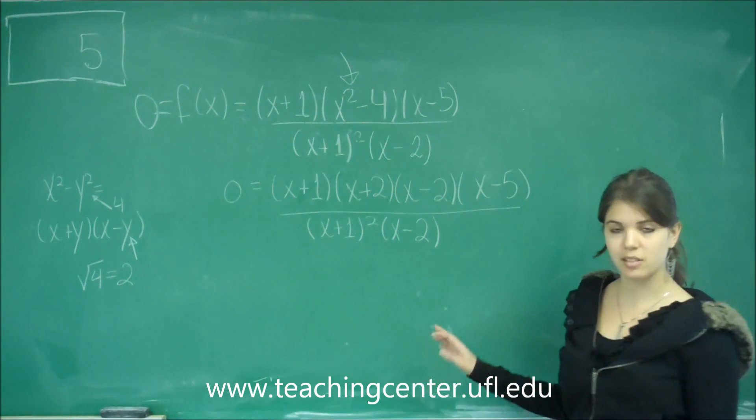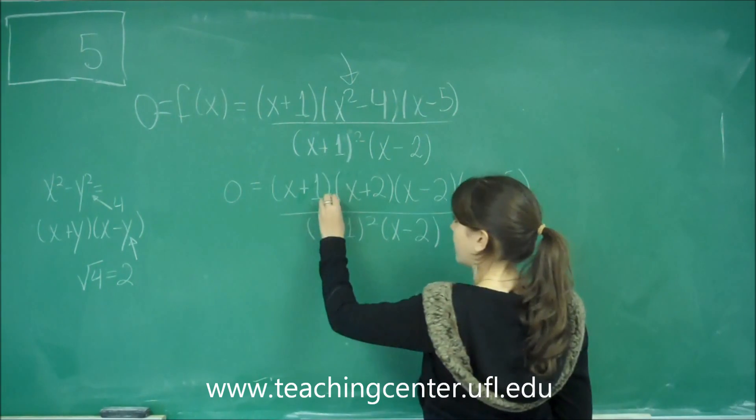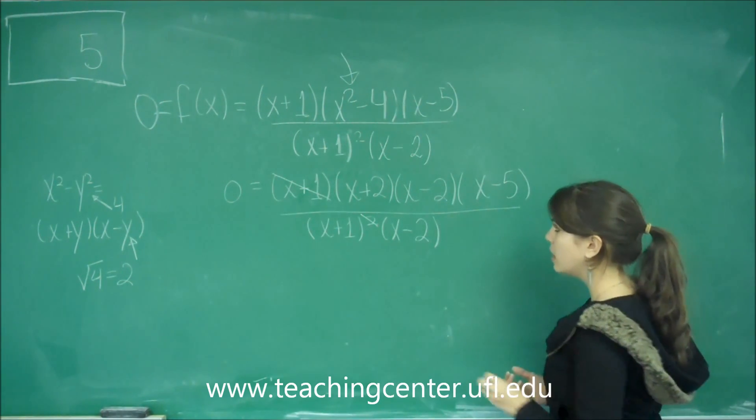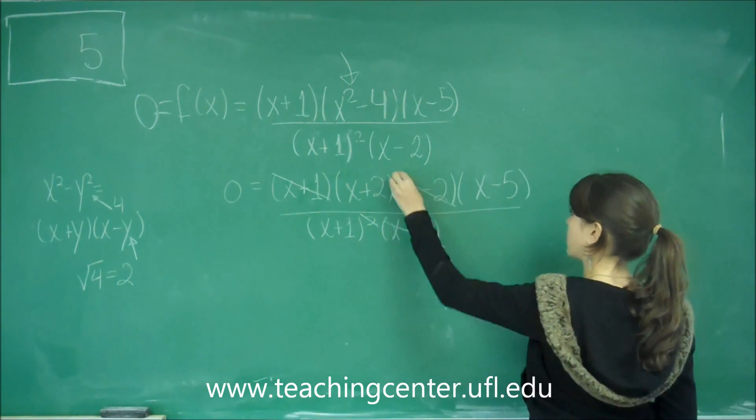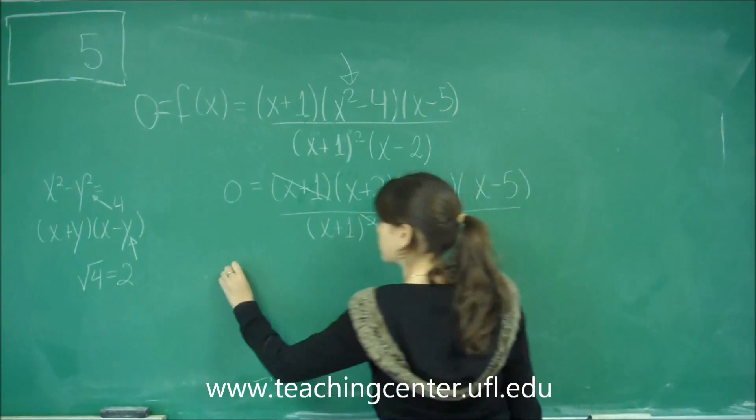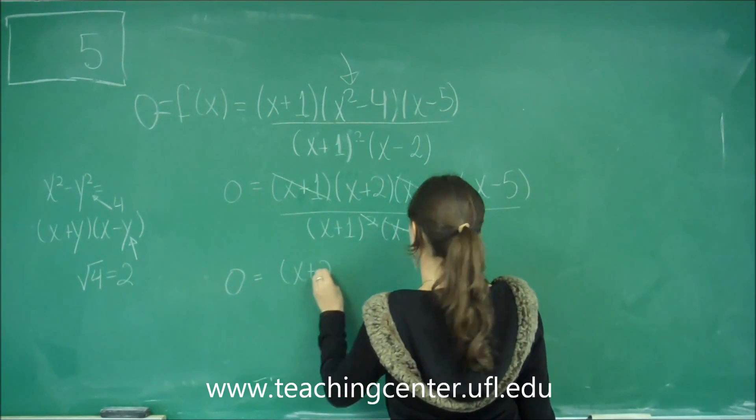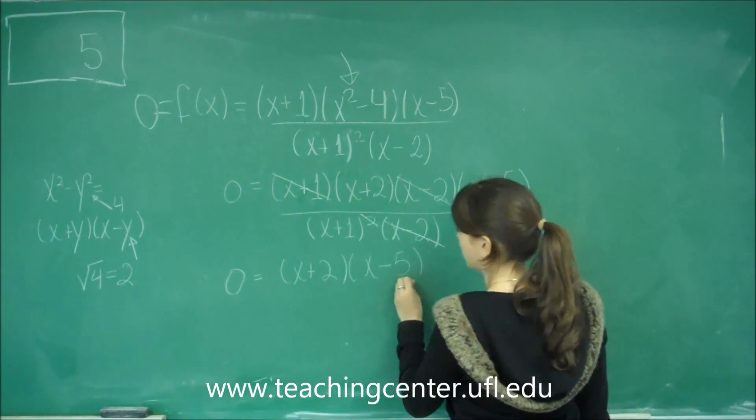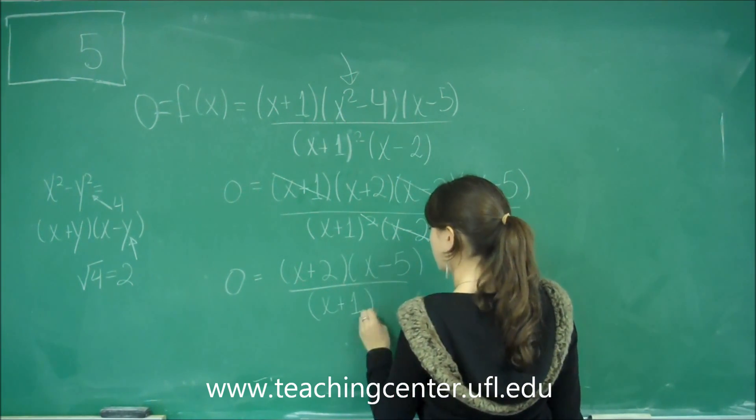Now that we've gotten this completely factored, let's see what crosses out. x plus 1 crosses out with 1 of the x plus 1's on the bottom, and then x minus 2 crosses out with x minus 2. Let's just write down what we have left, which is x plus 2, x minus 5 over x plus 1.